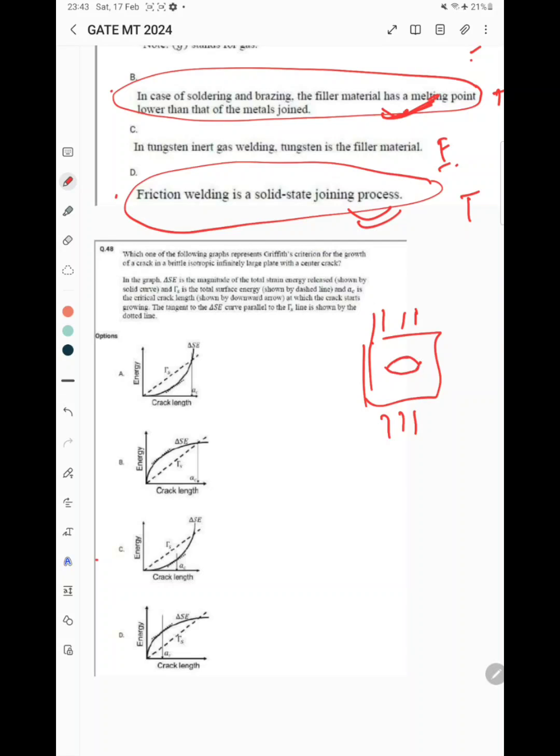How does the graph look for the energy release rate in terms of total strain energy and surface energy? Usually, if you've seen this graph, it's total energy versus crack length a. For surface energy, the graph looks linear. For strain energy, it decreases, and then the average of these two gives a combined curve. This is the crack length, but here delta C magnitude is given.